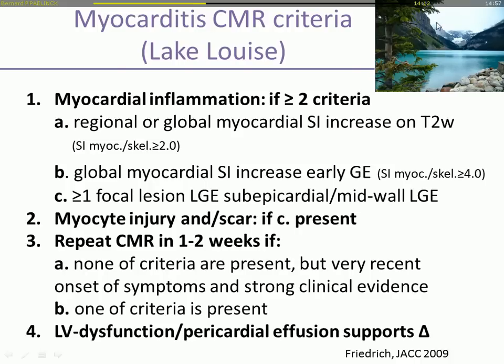The Lake Louise criteria are based on the assessment of myocardial inflammation if two or more of the following criteria are present: higher signal intensity on T2-weighted imaging, on early gadolinium enhancement, and on late gadolinium enhancement. They are also based on the assessment of myocardial scar if late gadolinium enhancement is present. Sometimes you will have a high suspicion of myocarditis and find no enhancement, so the recommendations propose to scan again after a period of one or two weeks. If you find LV dysfunction and pericardial effusion, then you have supportive evidence for myocarditis.